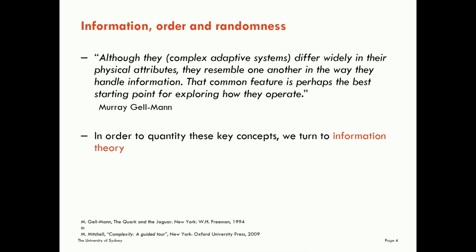We talked on and off about how complex systems process information, but didn't specifically define how to measure it yet. One more quote I want to share is a very nice one from Murray Gell-Mann, one of the founders of complex systems science and a Nobel laureate. He said: 'Although they — complex adaptive systems — differ widely in their physical attributes, they resemble one another in the way they handle information. That feature is perhaps the best starting point for exploring how they operate.' That's exactly the standpoint we're taking in this course.